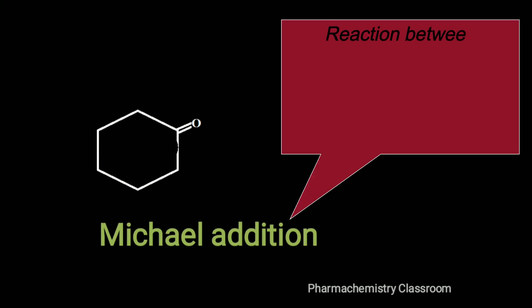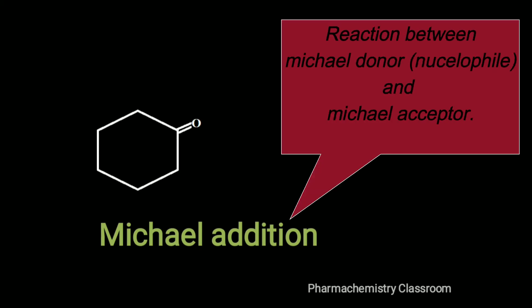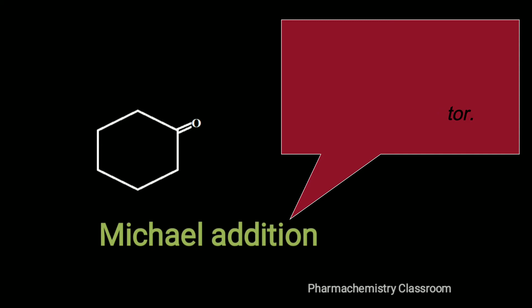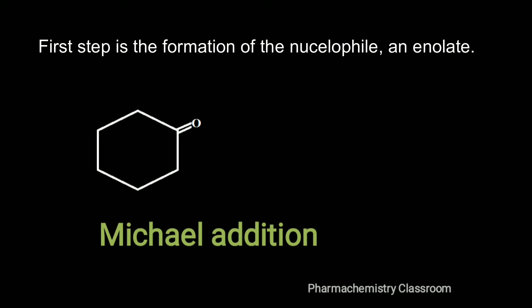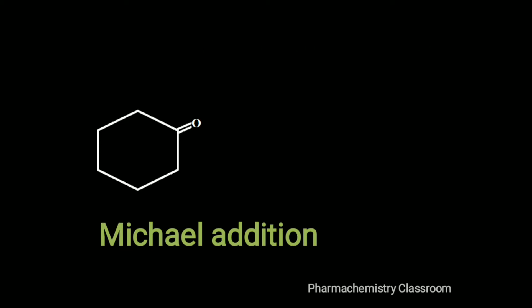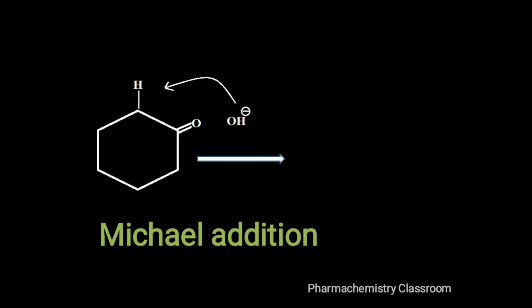The Michael addition is a reaction between a Michael donor, which is a nucleophile — maybe an enolate or a carbanion — and a Michael acceptor, an alpha-beta unsaturated carbonyl compound. The first step is the formation of the nucleophile, an enolate. The starting material ketone reacts with a base; the base abstracts the acidic alpha hydrogen to get the enolate ion. Look at the shift of electrons taking place.